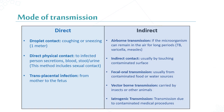Modes of transmission include direct and indirect. In direct transmission, we have: droplet contact — coughing or sneezing within one meter; direct physical contact — with infected person secretions, blood, stool, or urine, including sexual contact; and trans-placental infection — from mother to fetus. Indirect transmission includes airborne transmission, where organisms can remain in the air for long periods like TB and measles; fomite contact with contaminated surfaces; vehicle oral transmission from contaminated food or water; vector-borne transmission carried by insects or other animals; and iatrogenic transmission due to contaminated medical procedures.